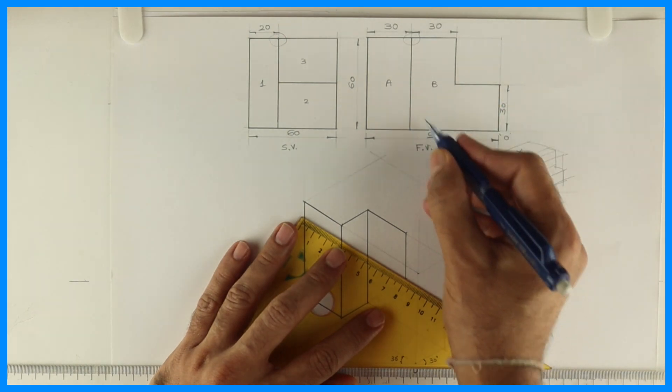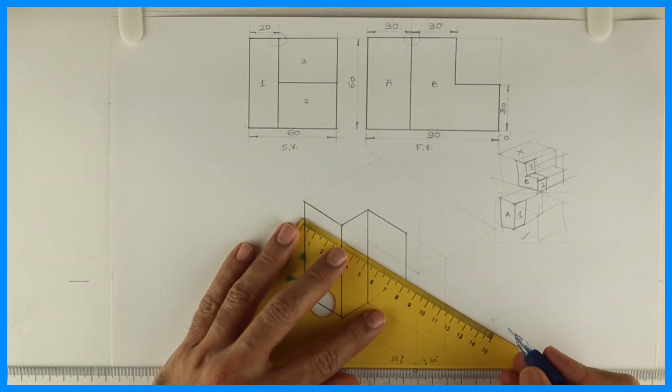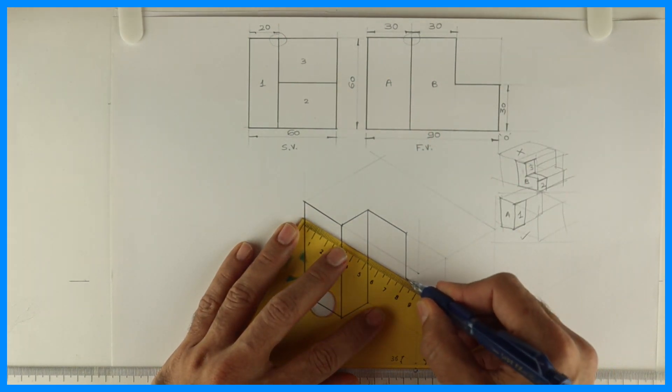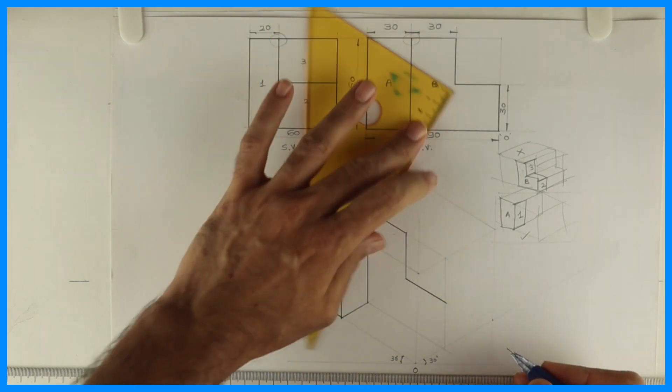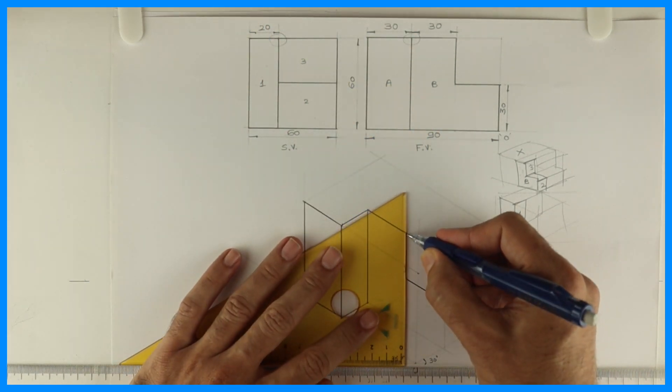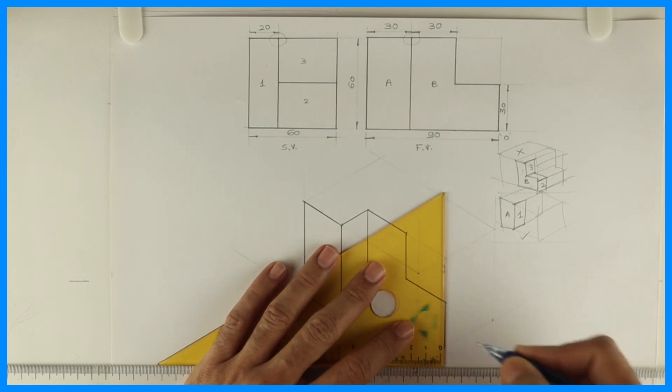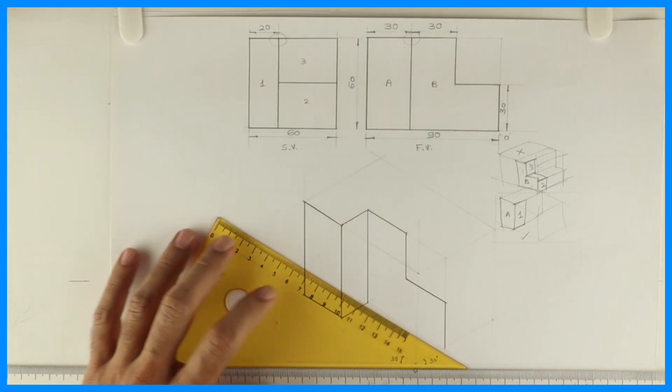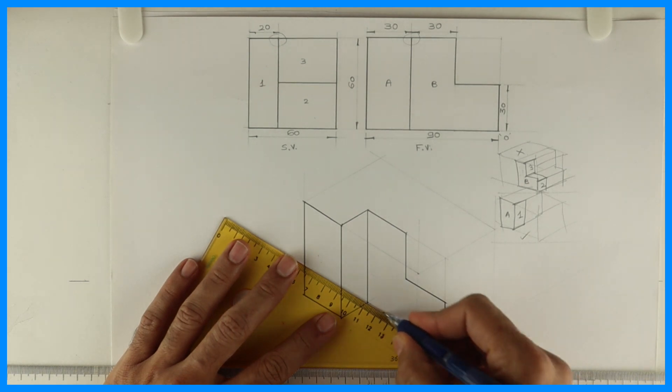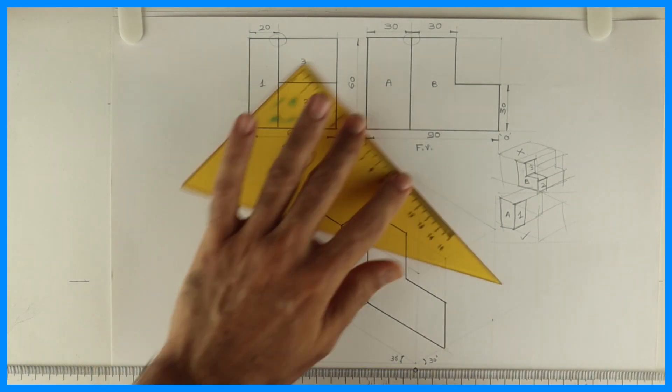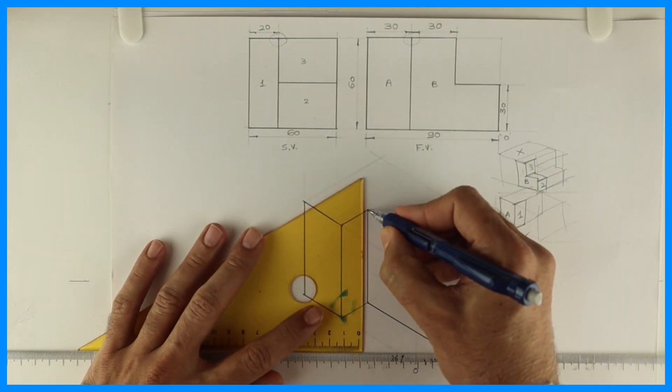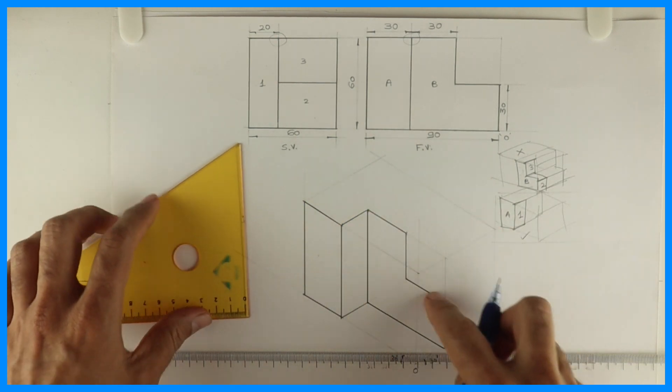30. See this. 30, 10, 30, 30. Now we draw the bottom line. So we got this part B.